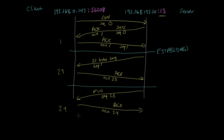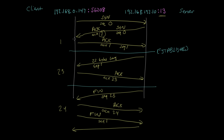Now the final thing that happens is the client closes the connection as well. The client sends a packet with its FIN bit set. The server sent a FIN, now it's the client's turn to send a FIN, and then the server will acknowledge that. When the client sends this FIN it sets the sequence number to one — because the first thing the client sent was a SYN with sequence number zero, and the client never sent any data, so the next sequence number is still one. The server then acknowledges with sequence number two, and the connection is completely closed.